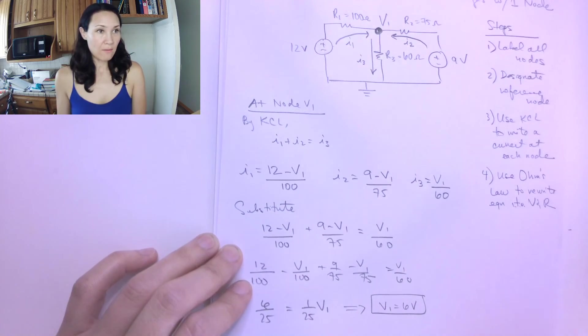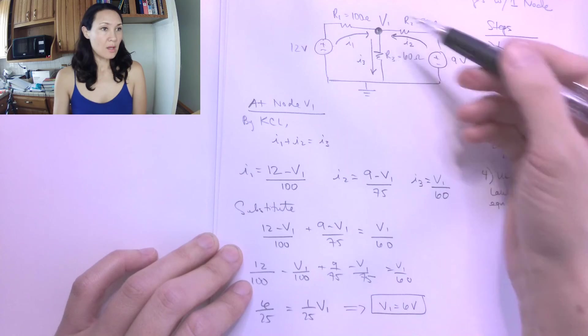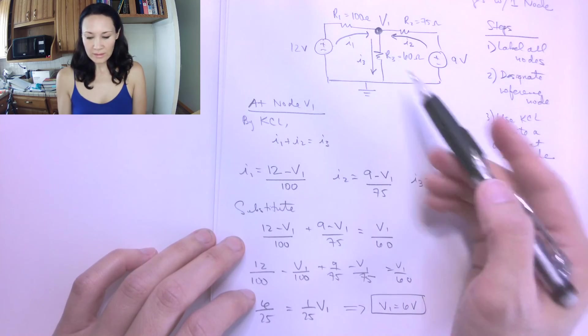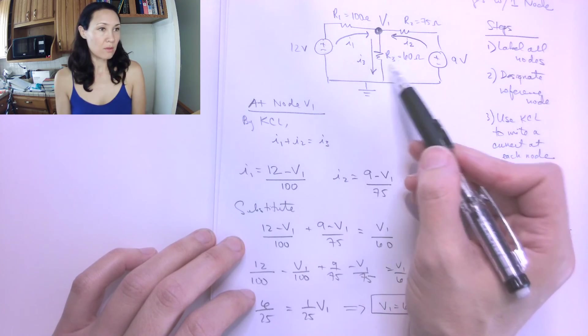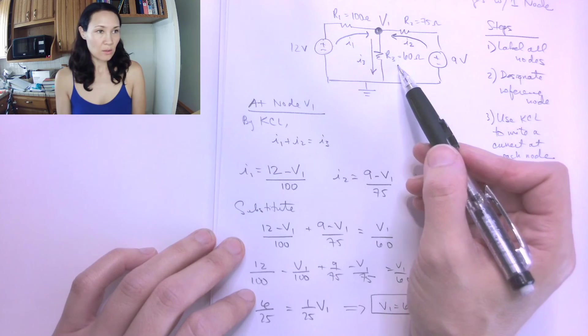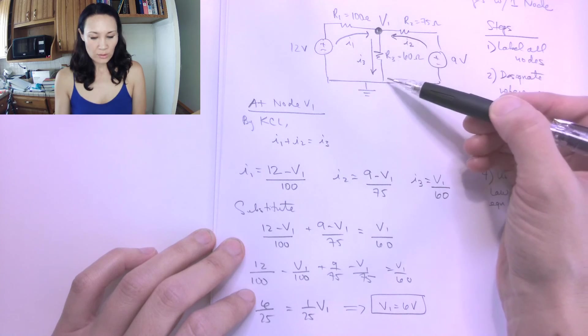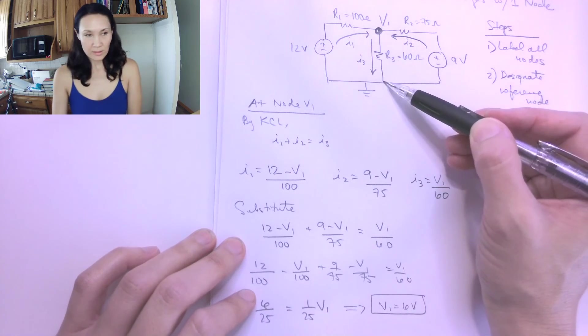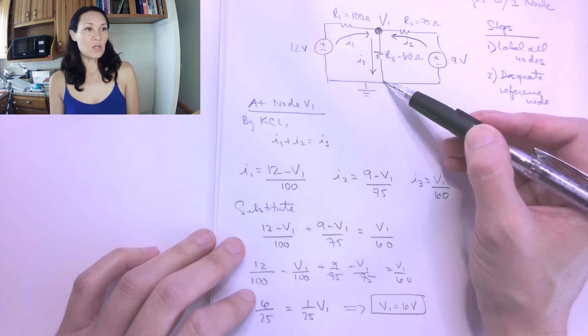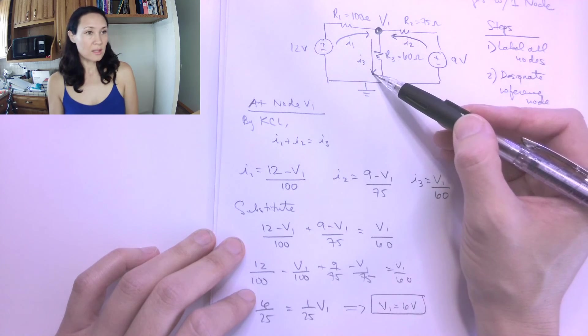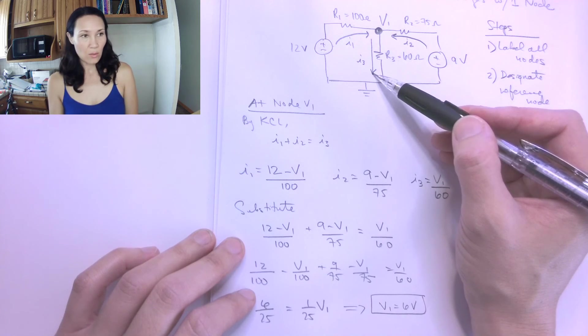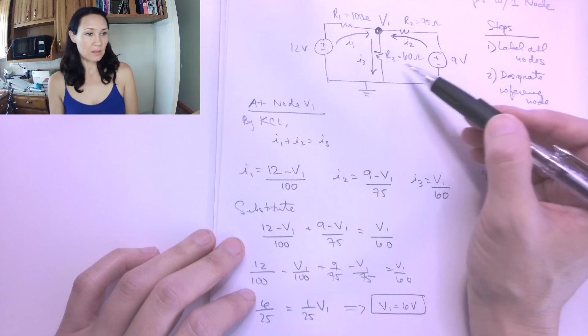So I now have the voltage at this node. So suppose I'm asked for what's the power dissipated by this 60 ohm resistor. Well, since I know the voltage drop between this node and ground, that makes the voltage drop across this R3 resistor 6 volts. Then I can use Ohm's Law to find the current, and I can plug that into my power equation, IV, to get the power dissipated here.